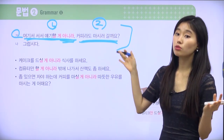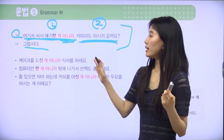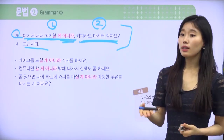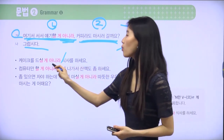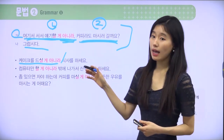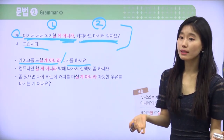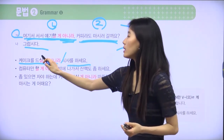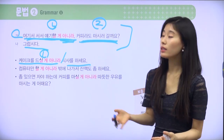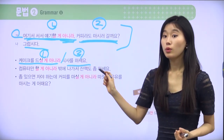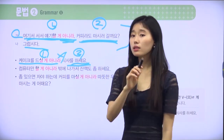So going to the cafe is the better suggestion — 우리 지금 커피 마실 수 있잖아요. Standing and talking is not the best way — we have a better selection. 케이크를 드실 게 아니라 지금 식사를 하세요 — this person is eating cake, but rather than eating cake, they should have a proper meal. Eating cake is not the worst choice, but having a proper meal is better.